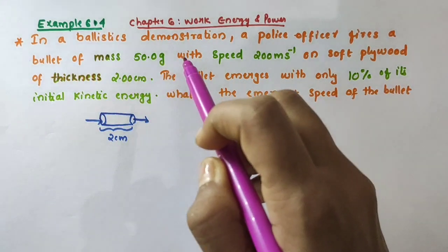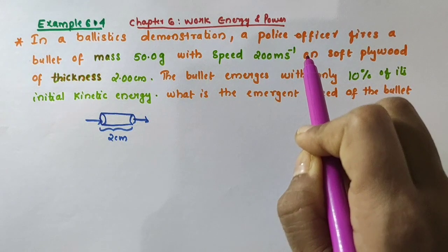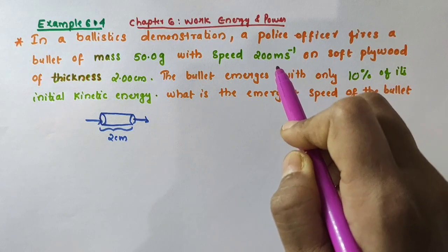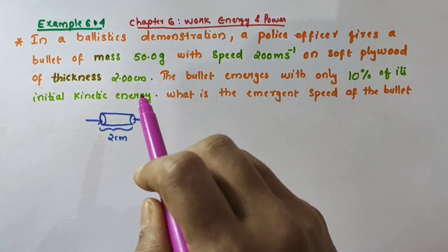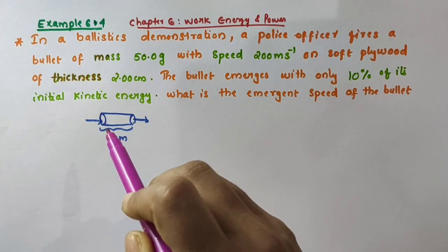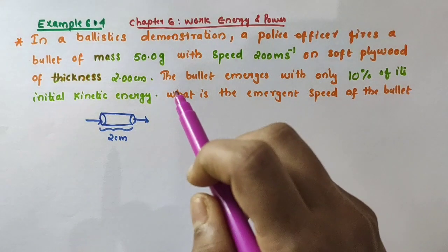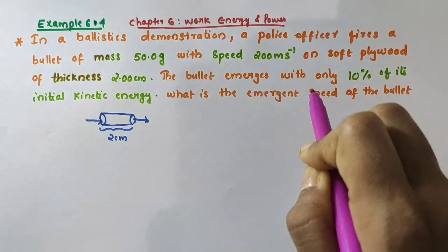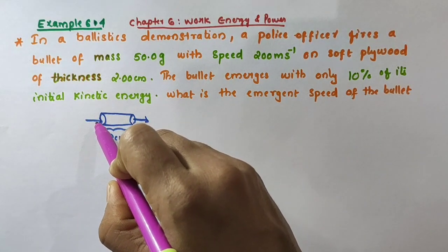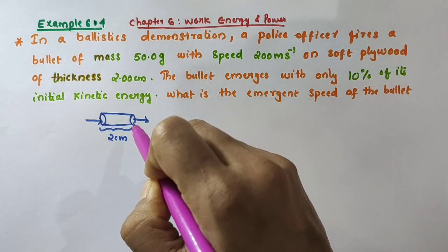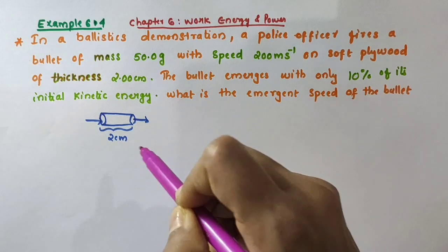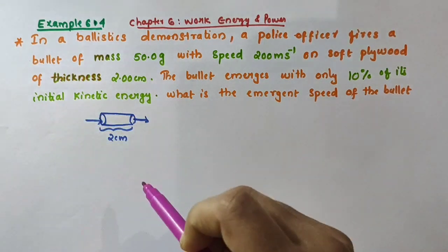The question is: in a ballistics demonstration, a police officer fires a bullet of mass 50.0 grams with speed 200 meter per second on soft plywood of thickness 2 centimeters. The bullet emerges with only 10% of its initial kinetic energy. So initially it has some kinetic energy and after passing through that 2 centimeter thickness of plywood it emerges out with a new velocity.